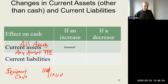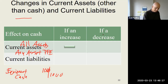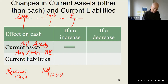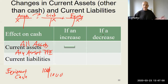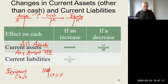What happens when you go across the equal sign in algebra? Assets equal liabilities plus equity. Assets have a normal debit balance — an increase is a debit. Liabilities have a credit balance, equity has a credit. When you cross the equal sign, whatever was a plus on one side is a negative on the other. So if an increase in an asset is a negative, then a decrease in an asset has to be a plus.